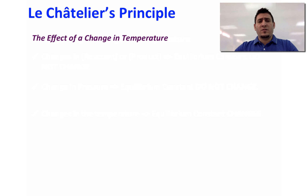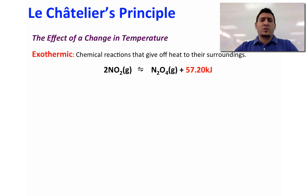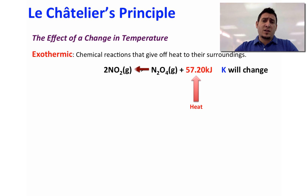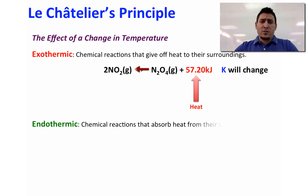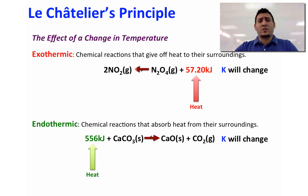For exothermic reactions, heat is considered one of the products. So if we add heat, the equilibrium will shift to the left side, and the equilibrium constant will change. For endothermic reactions, heat is considered one of the reactants. So if we add heat to the system, the system will shift to the right side, and K will also change.